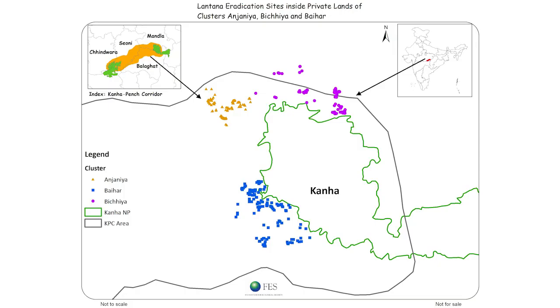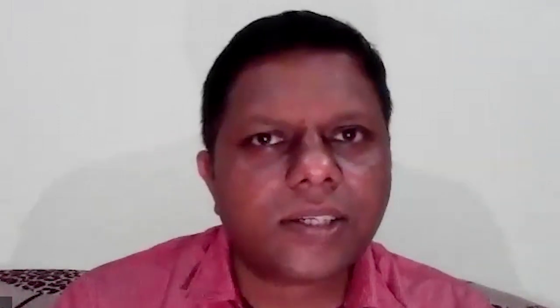So far, we have removed Lantana from around 5,000 hectares of land in more than 500 sites around Kanha Tiger Reserve. The program is now in a stage — it is already five to six years old — and we would like to see that it gets some kind of recognition beyond the landscape and travels to other places.